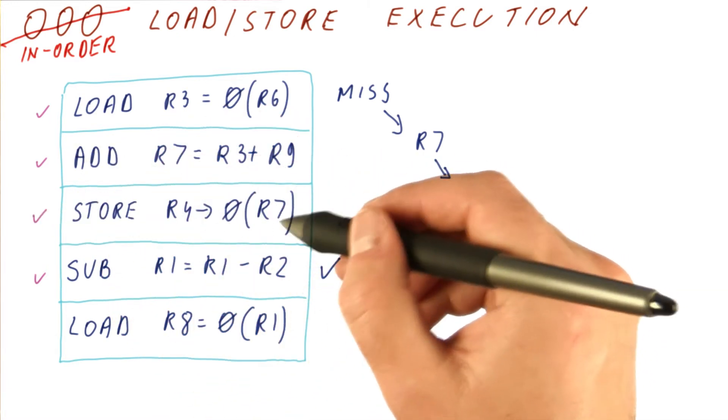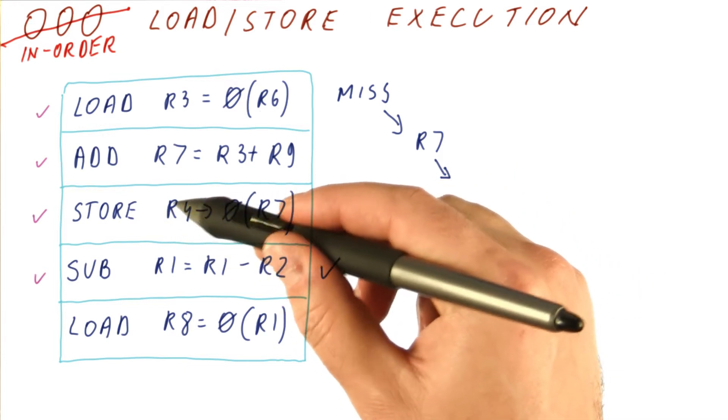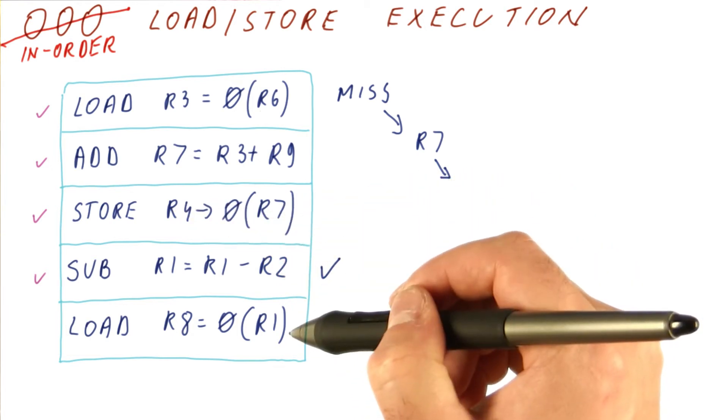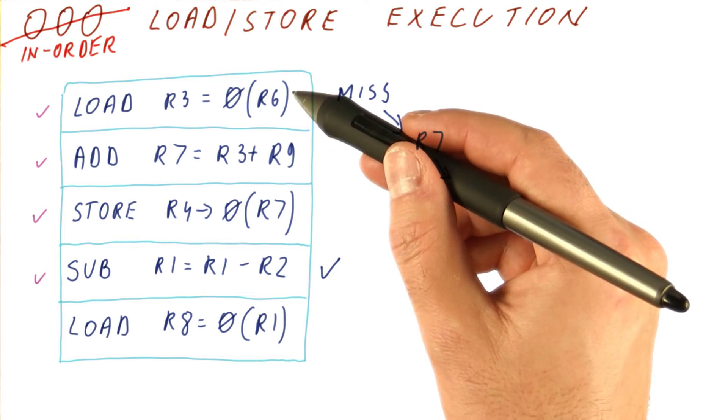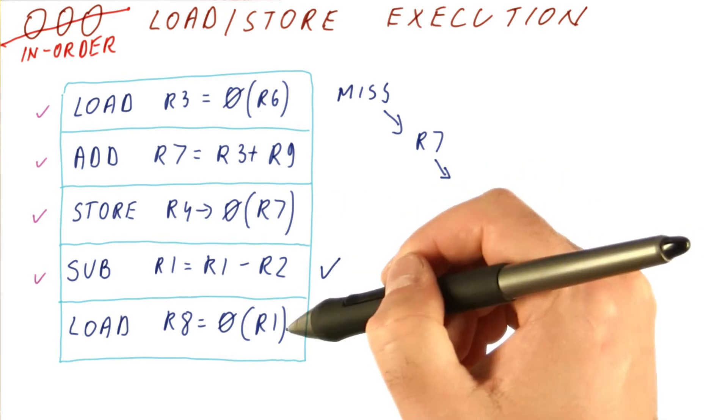The store is considered done, not when it commits, but when it actually knows the address and knows the value that is going to go to that address. At that point only, this load is allowed to proceed, because at that point it can just check whether any stores produce the value for the address that we are interested in, and if so, just grab the value.